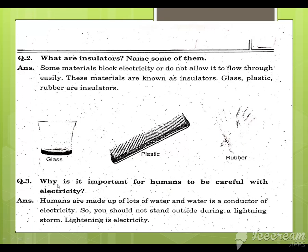Question 3: Why is it important for humans to be careful with electricity? Because humans are made up of lots of water, and water is a conductor of electricity. So, you should not stand outside during a lightning storm — lightning is electricity.